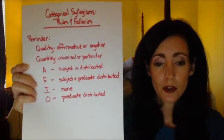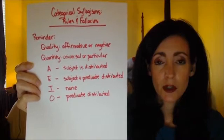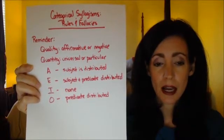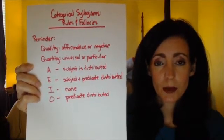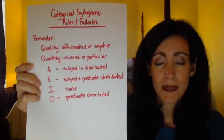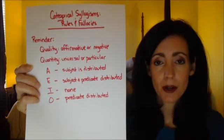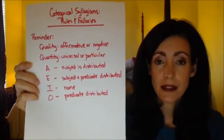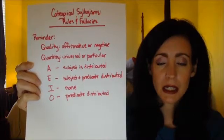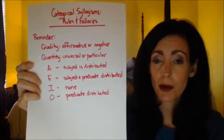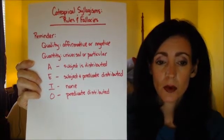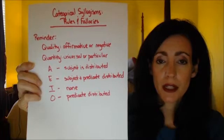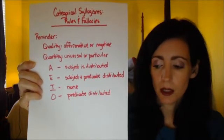With distribution, it applies to every member of the whole class. So if we say the subject is distributed, we're talking about that term applying to every member of that class. With A statements, it's the subject. With E, it's the subject and the predicate. With I, it's none. And with O, the predicate is the term that's distributed.